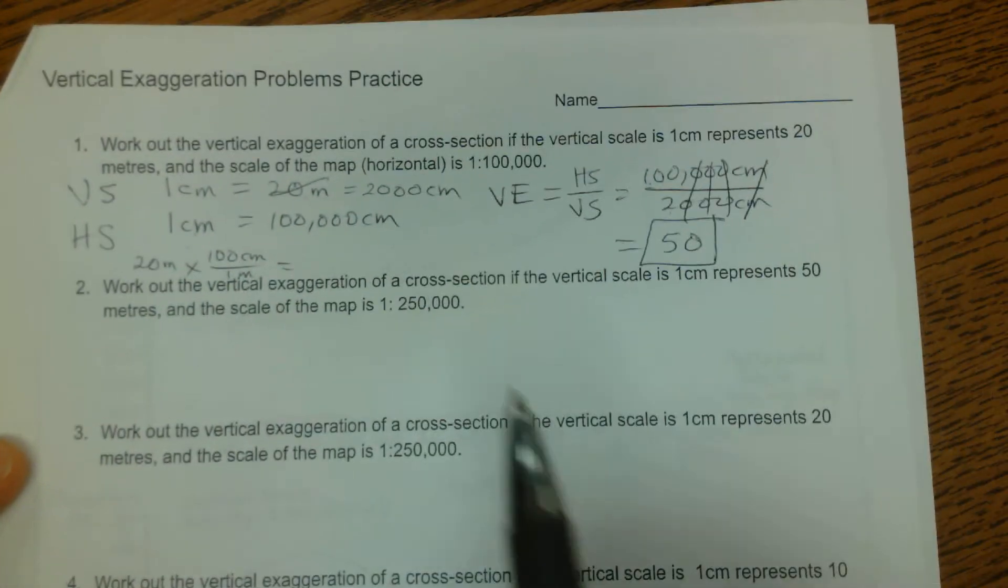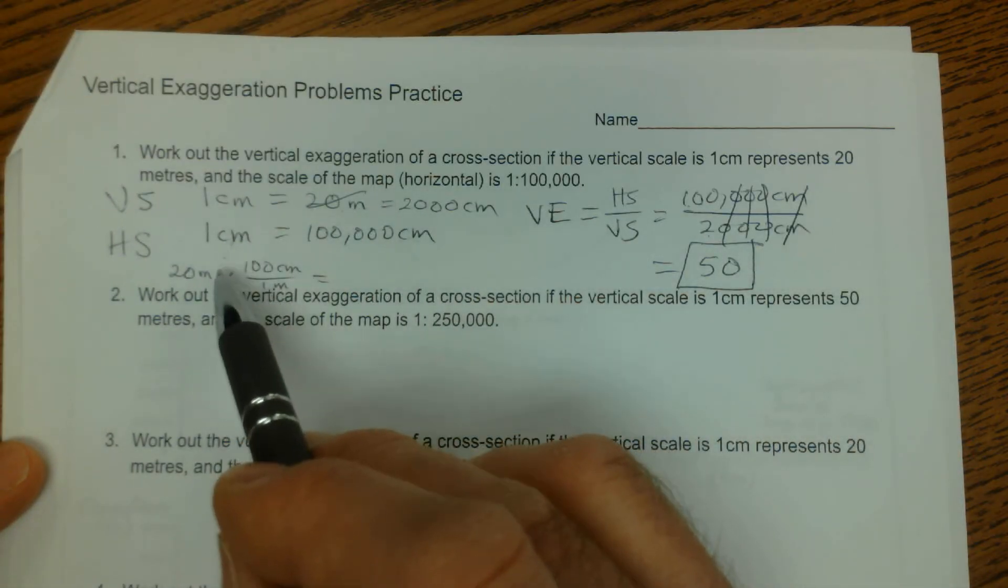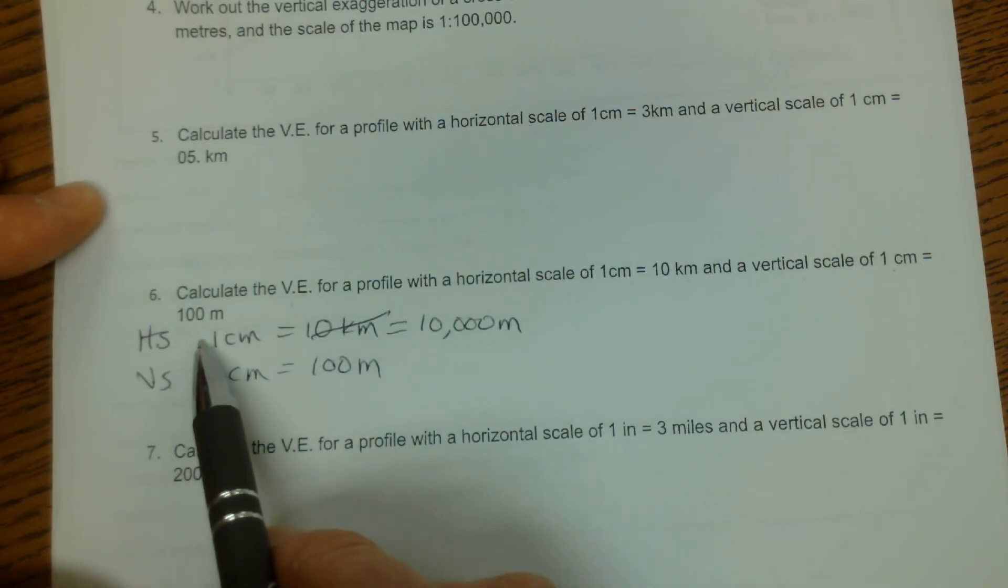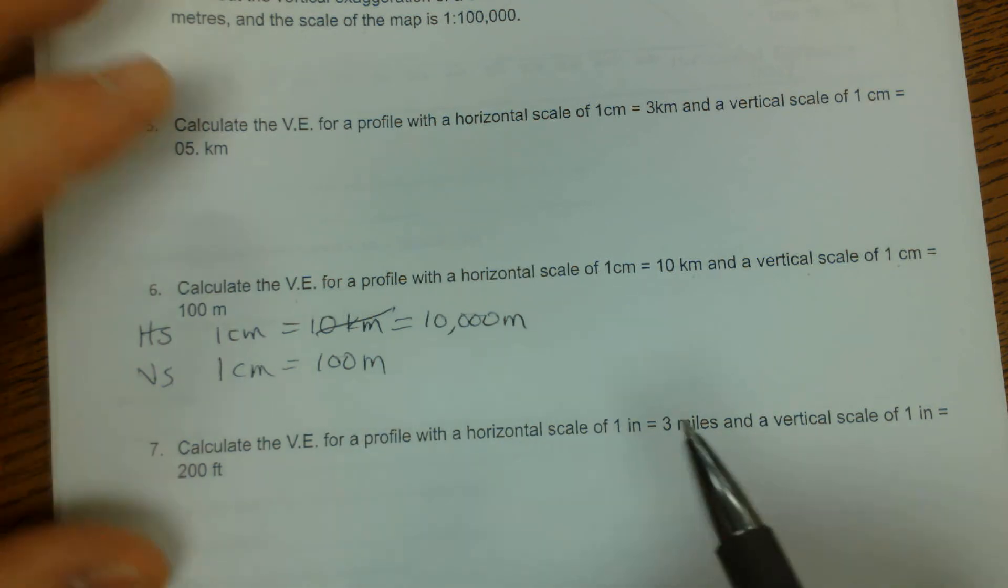Now, you'll notice up above here, these problems are a little different. They gave you the vertical scale, then the horizontal scale. Down here, they're giving you the horizontal scale first, and then the vertical. So make sure you label them to keep track of it.